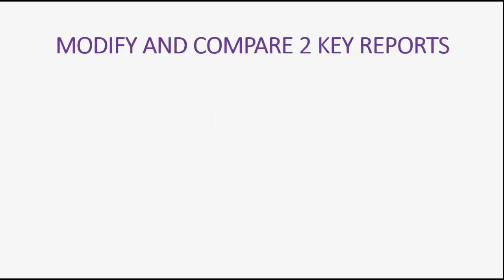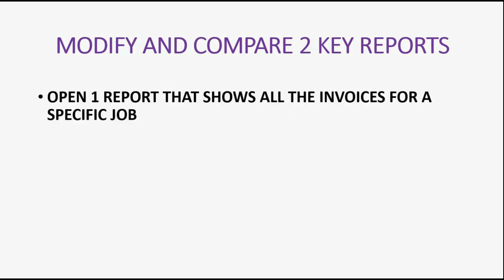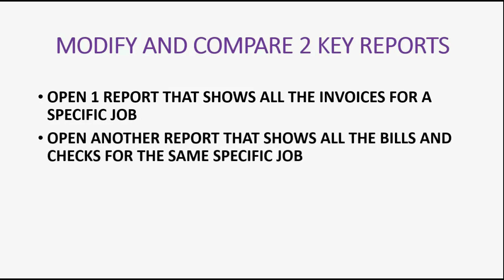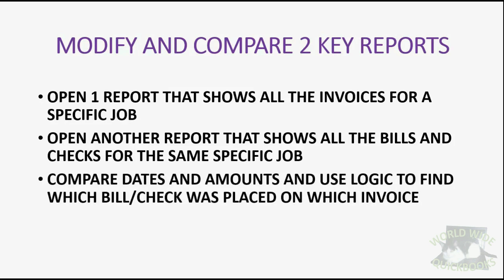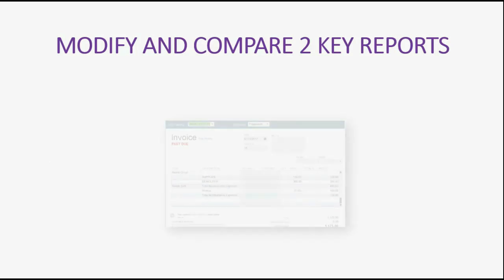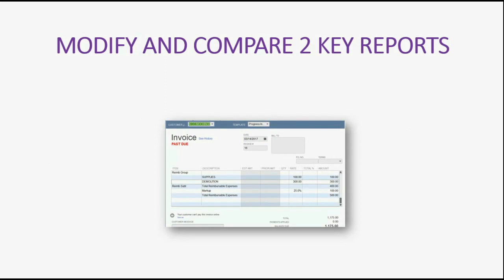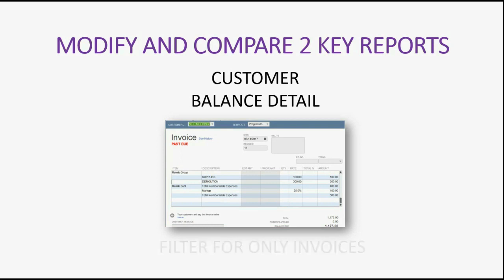The first method is to modify and compare two crucial reports, and the other method is to add a bill number to the memo field when recording invoices, bills, and checks. Let's talk about the first method: modify and compare two key reports. We open one report that shows all the invoices for a specific job, then we open another report that shows all the bills and checks for that same specific job. Then we compare the dates and amounts and use logic to find which bill or check was placed on which invoice. First we'll start with the report that shows the invoices.